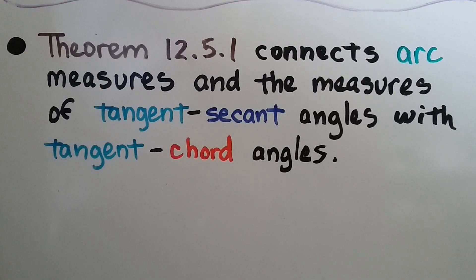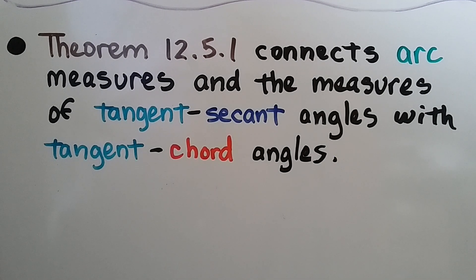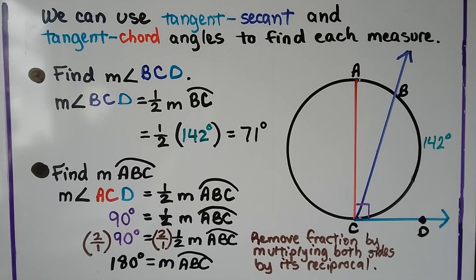Theorem 12.5.1 connects arc measures and the measures of tangent-secant angles with tangent-chord angles, and we can use tangent-secant and tangent-chord angles to find each measure.